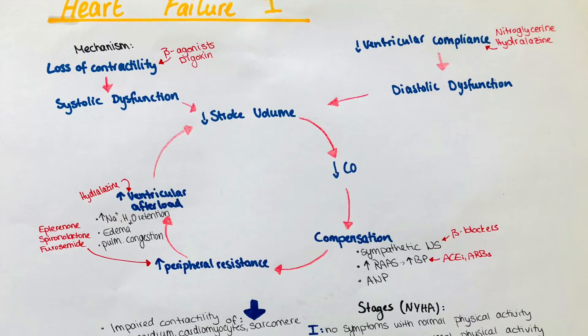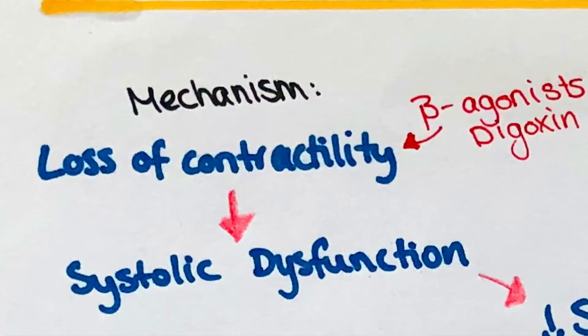The next point I want to talk about is the mechanism of heart failure. There are a couple of factors which promote the development of cardiac dysfunction. One of them is the loss of contractility. So a decrease in the strength with which the heart contracts. This can be caused among others by calcium imbalance, hypertension, dilatation. The loss of contractility will lead to a systolic dysfunction.